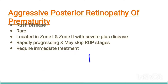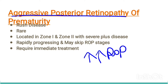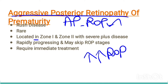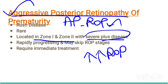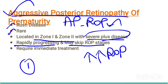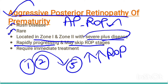Now we will see the very severe form of ROP — Aggressive Posterior Retinopathy of Prematurity, abbreviated as APROP, also called rush disease. It involves zone 1 and zone 2 with severe plus disease. It is very rare, but when it occurs it is extremely severe, rapidly progressive, and can skip the ROP stages — going directly from stage 1 or 2 to stage 5 — and requires immediate treatment.